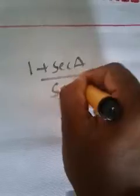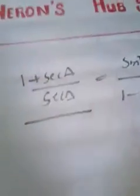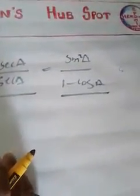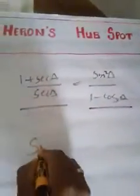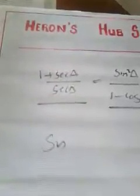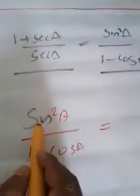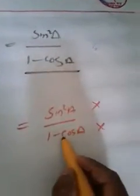For the previous question — 1 plus cos A divided by cos A equals sin squared A by 1 minus cos A — the LHS simplification is very simple. For RHS, one more method exists. I will show you another method to simplify RHS. RHS is sin squared A divided by 1 minus cos A. In the previous method we replaced sin squared A by 1 minus cos squared A. Instead of that, what I'm going to do now is multiply both numerator and denominator with the conjugate.